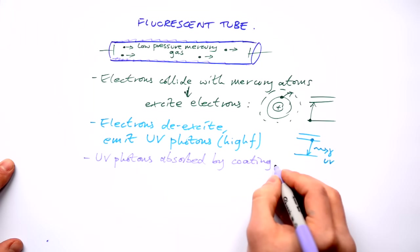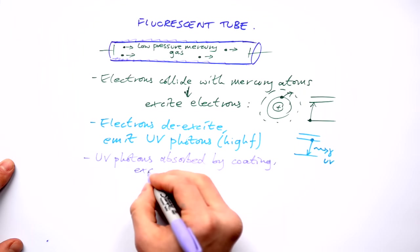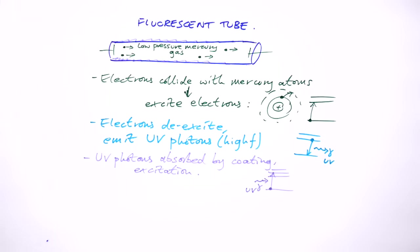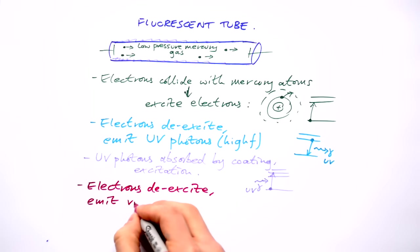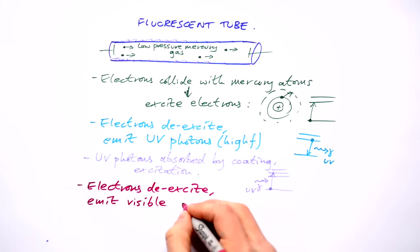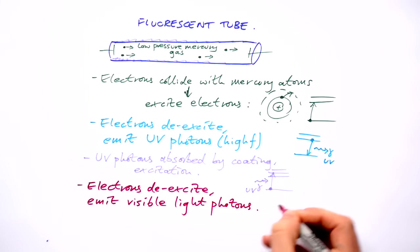But if we have this coating, the UV photons are absorbed by the coating and we have excitation again. What do they do in turn? When they de-excite, they emit visible photons, therefore lighting up a room that they're in.